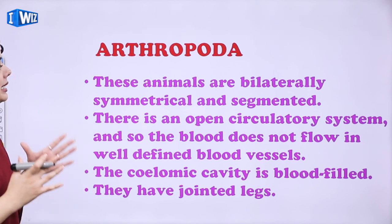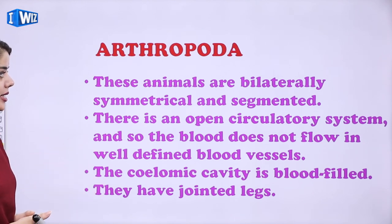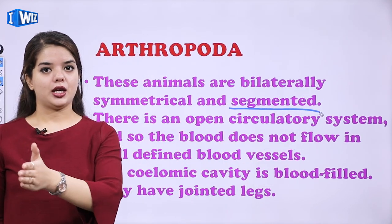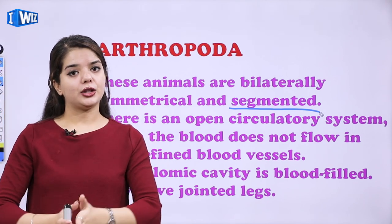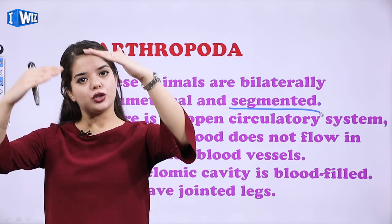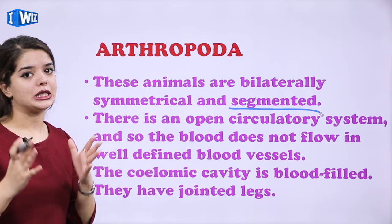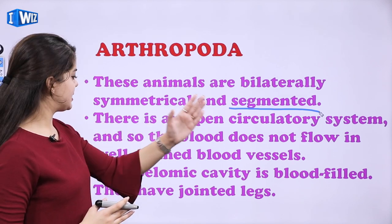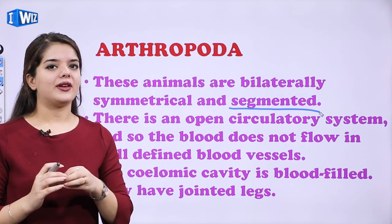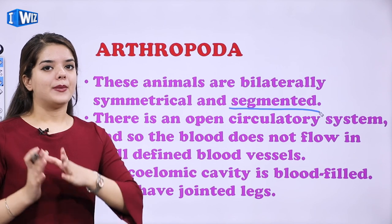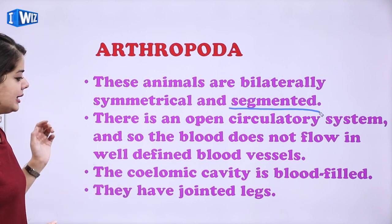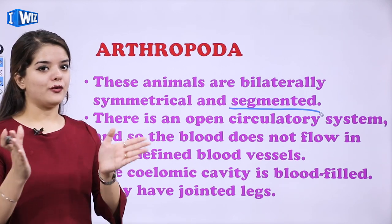Then we have Arthropoda. These animals are bilaterally symmetrical and segmented — segmented matlab different segments hote hai, jaise human body mein bhi different segments hoti hai: mouth, neck, stomach, legs. There is an open circulatory system so blood does not flow in well-defined blood vessels. The coelomic cavities are blood-filled, and they have jointed legs.